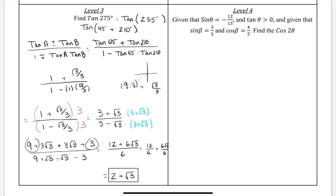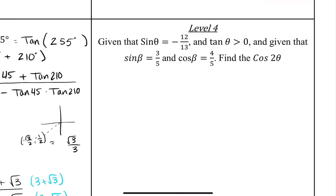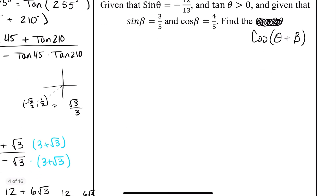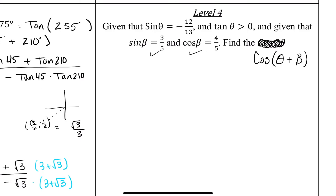The last problem says: given that sine of θ is −12/13 and tangent of θ is greater than 0, and given that sine of β is 3/5 and cosine of β is 4/5, find the cosine of θ plus β. We already know the beta values — sine and cosine of β are given. The issue is we don't know the cosine of θ. Since sine is negative, θ must be in quadrant 3 or 4. Since tangent can only be positive in quadrant 1 or 3, θ must be in quadrant 3.